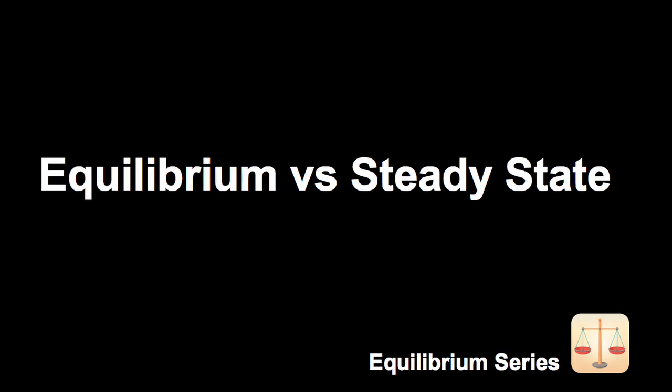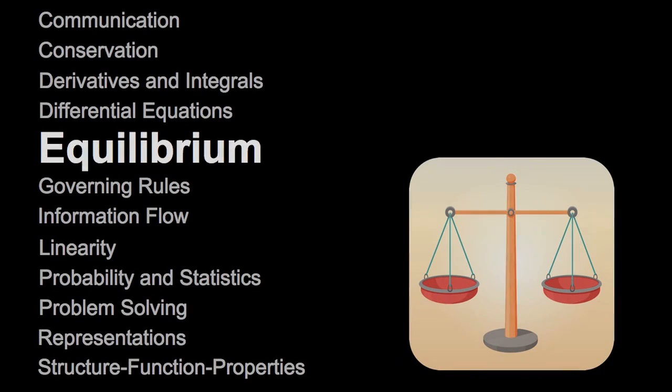This video is part of the Equilibrium video series. It is often important to determine whether or not a system is at equilibrium. To do this, we must understand how a system's equilibrium state is constrained by its boundary and surroundings. My name is John Leonhard, and I am a professor of mechanical engineering at MIT. Today, I am going to talk to you about equilibrium and steady state.